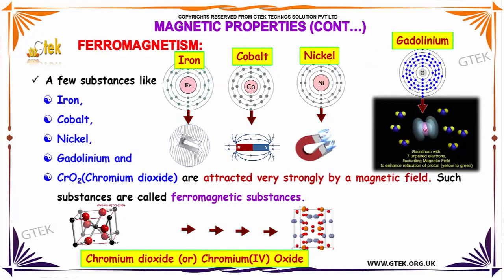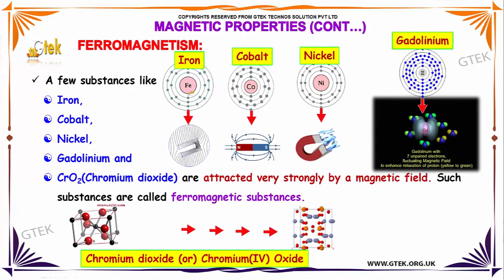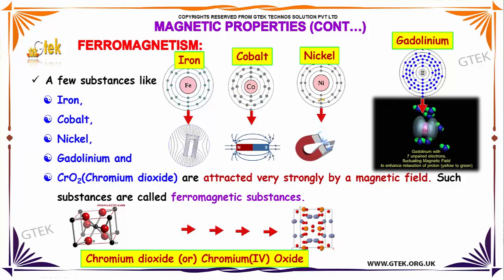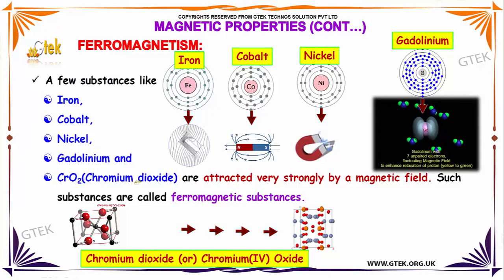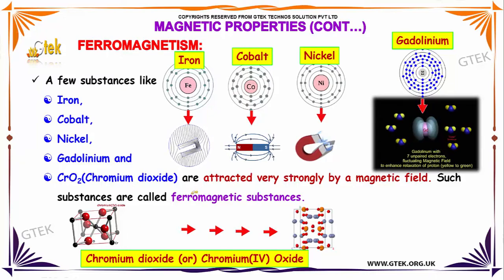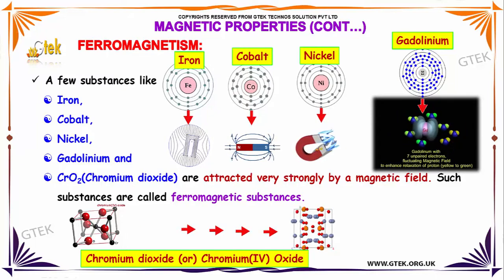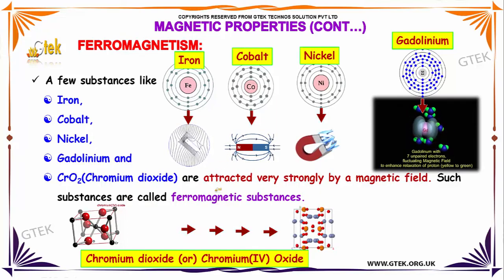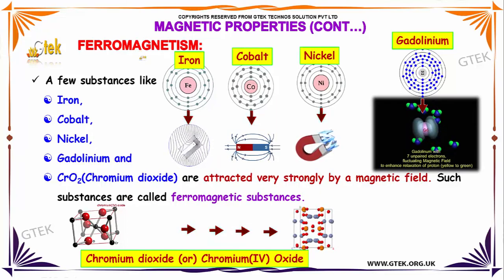Ferromagnetism. A few substances like iron, cobalt, nickel, gadolinium, and chromium dioxide are attracted very strongly by a magnetic field. Such substances are called ferromagnetic substances.